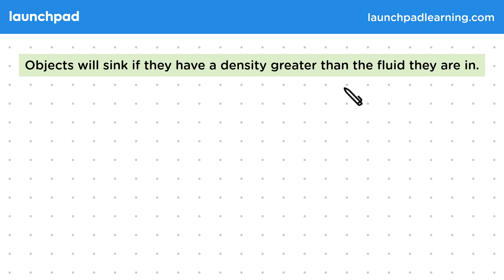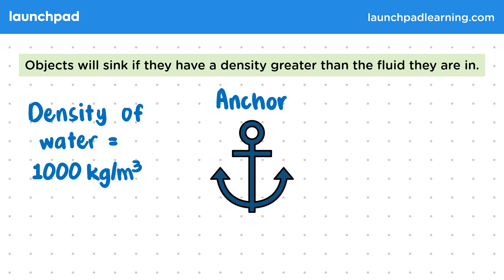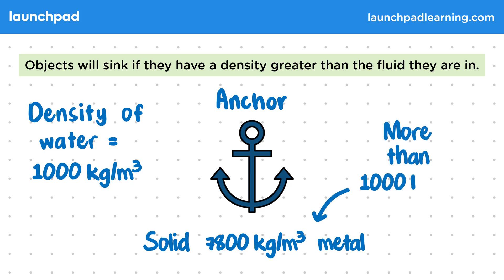So when certain objects are designed to sink, they are done so using dense materials. For example, we need an anchor to sink to the bottom of the ocean to hold a ship in place. Seawater is denser than pure water because of the salt dissolved in it, but let's assume it has a density of pure water, which is 1000 kg per metre cubed — a value you could be asked to recall in an exam. The anchor could be made out of solid metal with a density of around 7800 kg per metre cubed, meaning the density of the anchor is much more than the density of water.